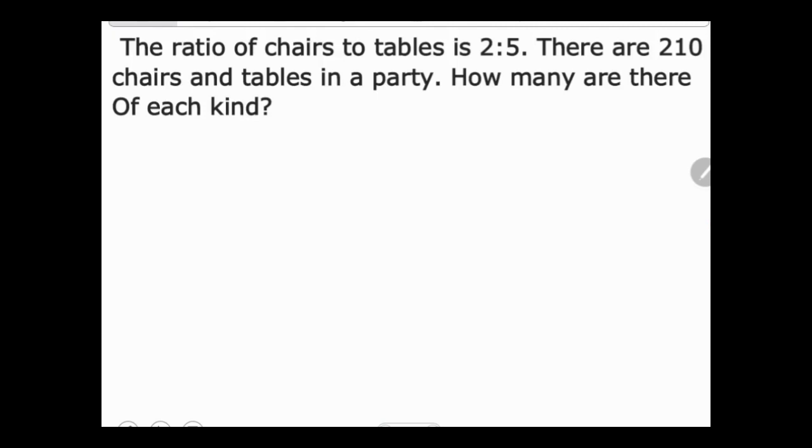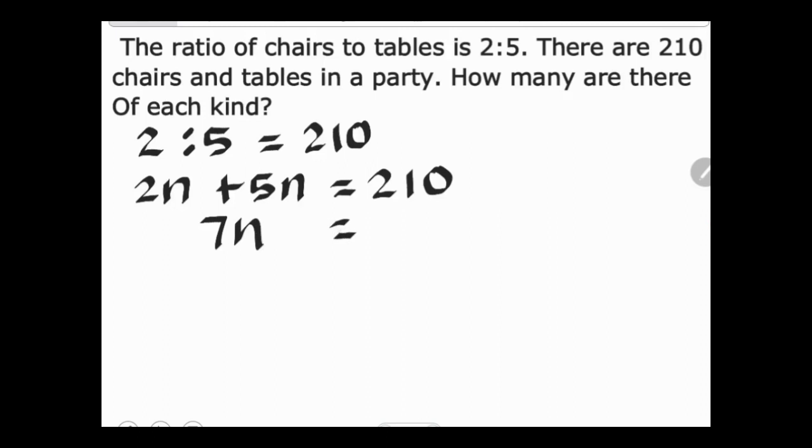For the solution, first write 2 to 5 and the total is 210. Now find the ratio. We have 2 times n for the number of chairs, plus 5 times n equals 210. So 2n plus 5n equals 7n equals 210.